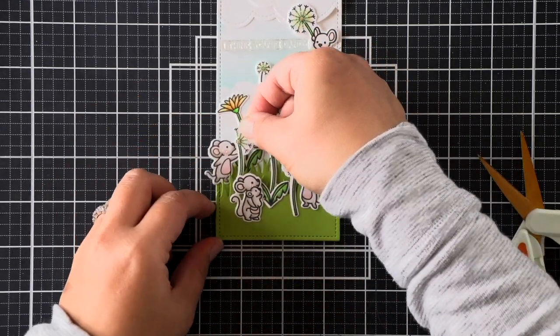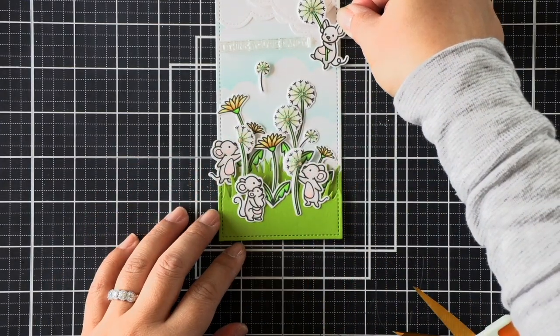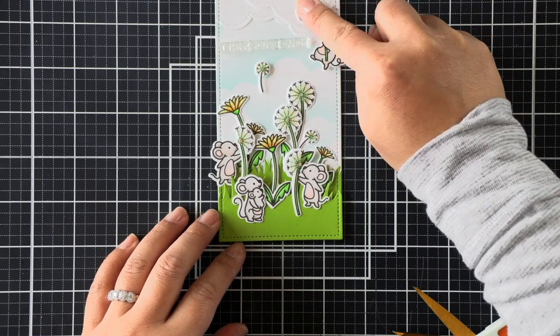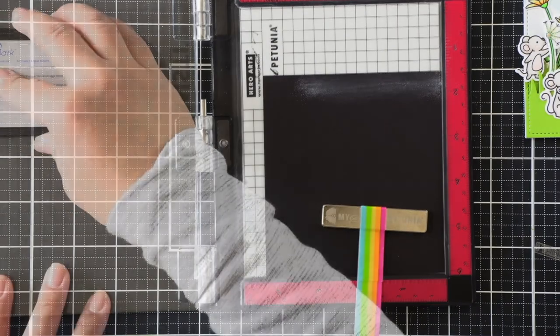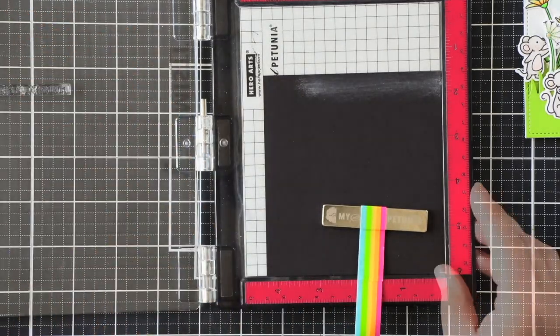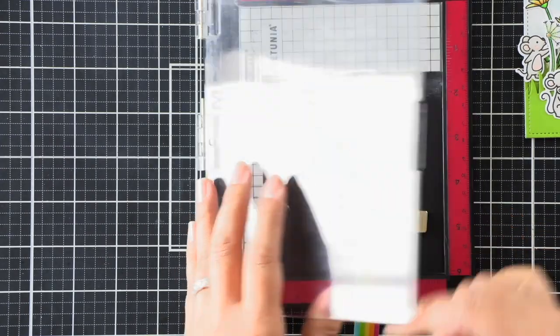I am just adding some foam adhesive to the bottom of the mouse, and then that seed head is just going to get liquid glue because that's going to adhere directly to the cloud that is already attached with some foam adhesive. For the sentiment, I am simply embossing in white over black cardstock, so I've prepared my cardstock with some anti-static powder tool.